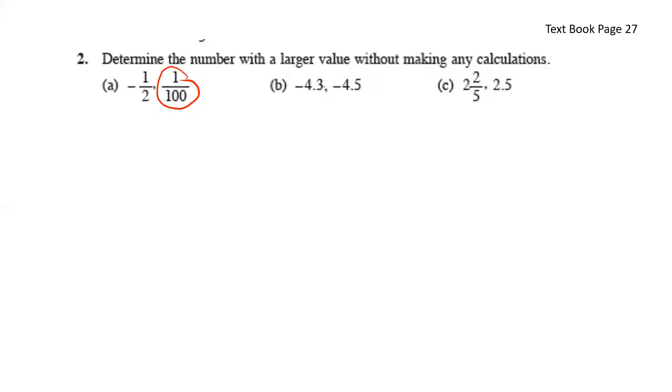Negative 4.3 and negative 4.5. Here, negative 4.5 is of a larger negative value, which means that it is smaller, it is more negative. So this makes this the larger value.